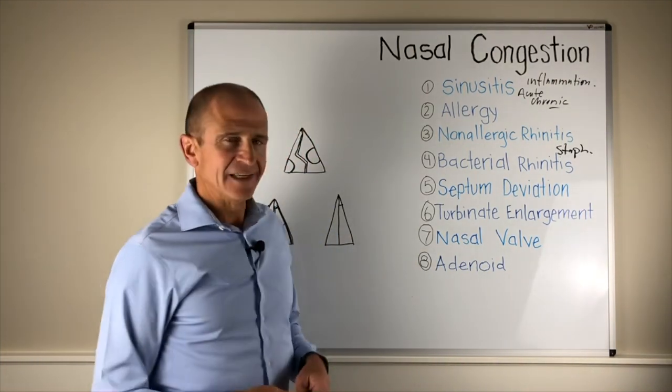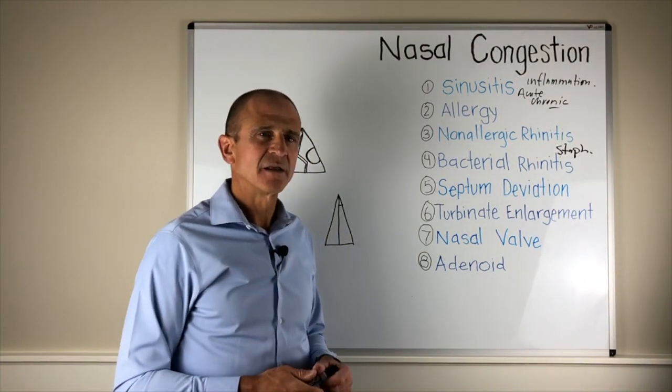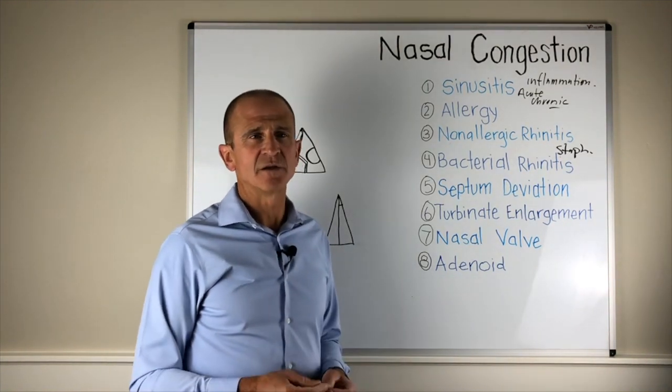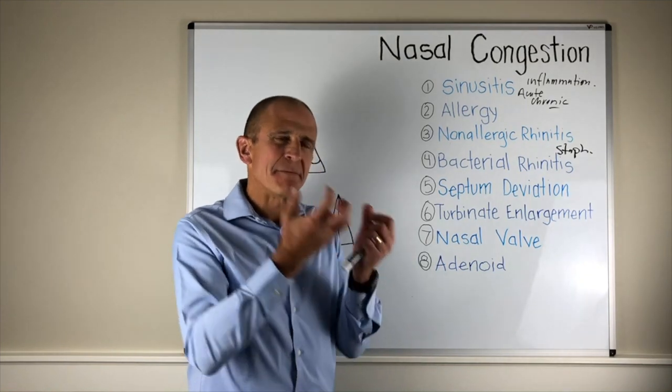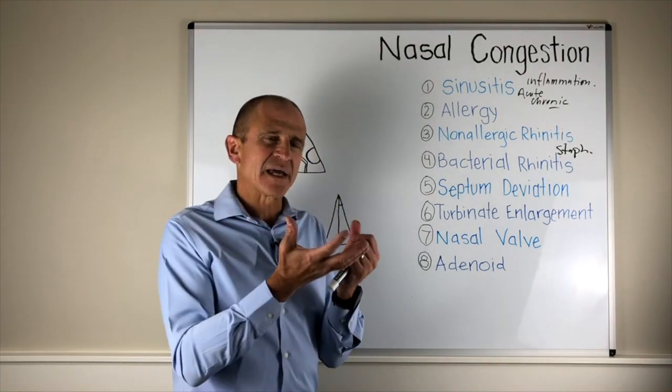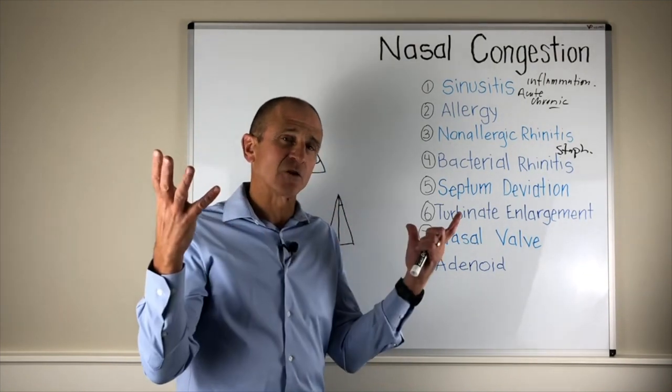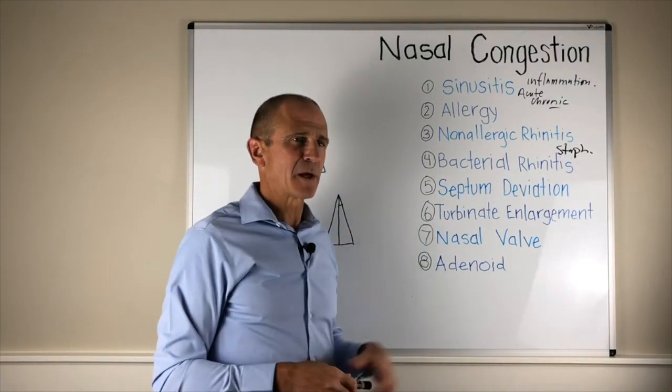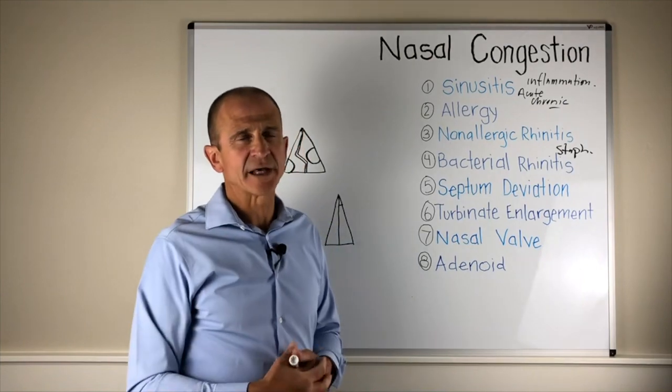Finally, mostly in children, you can have adenoid hypertrophy or adenoid enlargement that can obstruct the nose. The adenoid sits in the back of the nose, and as air passes that area, if you have enlargement, as we see in a lot of children, that adenoid hypertrophy can restrict the nasal passages.